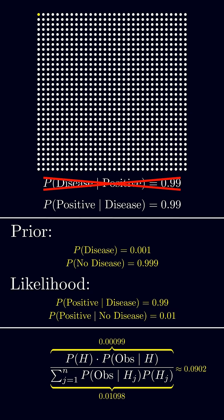The probability of any person actually having the disease given they have received a positive test is only 9%.